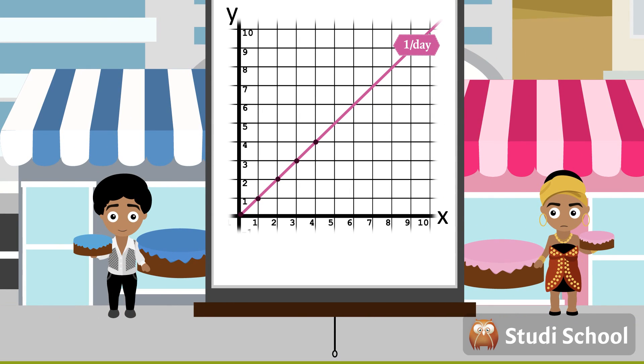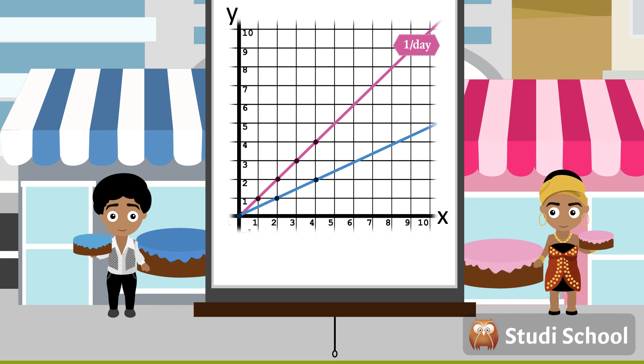Michael sells cakes too. Here's his results. Michael's line is not as steep as Mary's. It tells us Michael is selling slower than Mary.